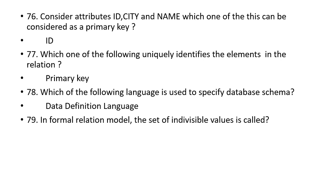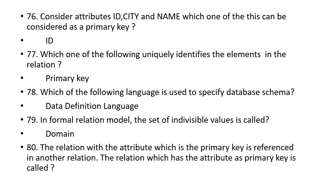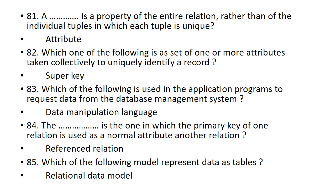In the formal relation model, the set of indivisible values is called a domain. The relation with the attribute which is the primary key referenced in another relation is called the referenced relation. A property of the entire relation rather than of individual tuples, in which each tuple is unique. Which one of the following is a set of one or more attributes taken collectively to uniquely identify a record? Super key.